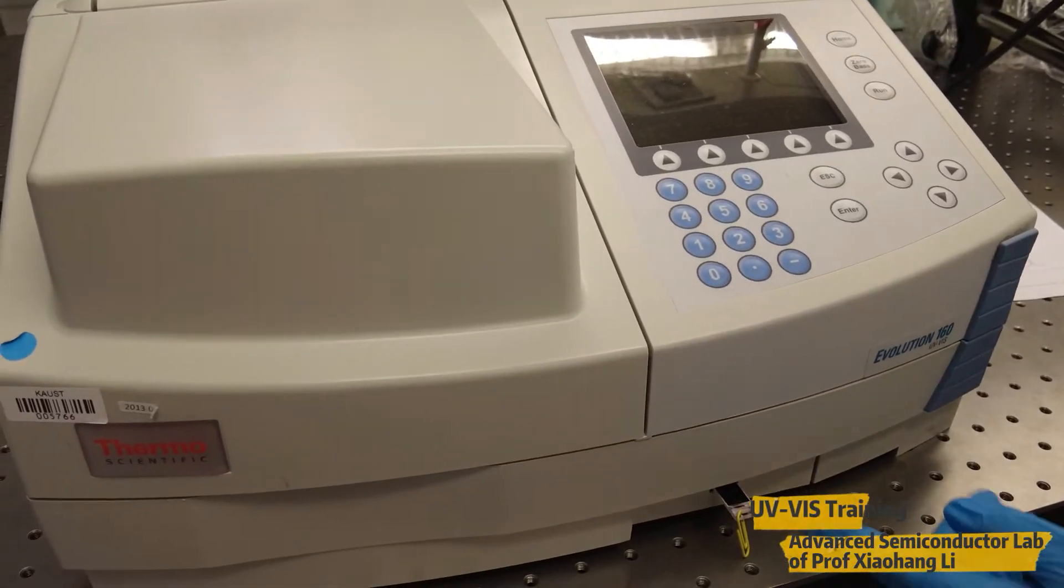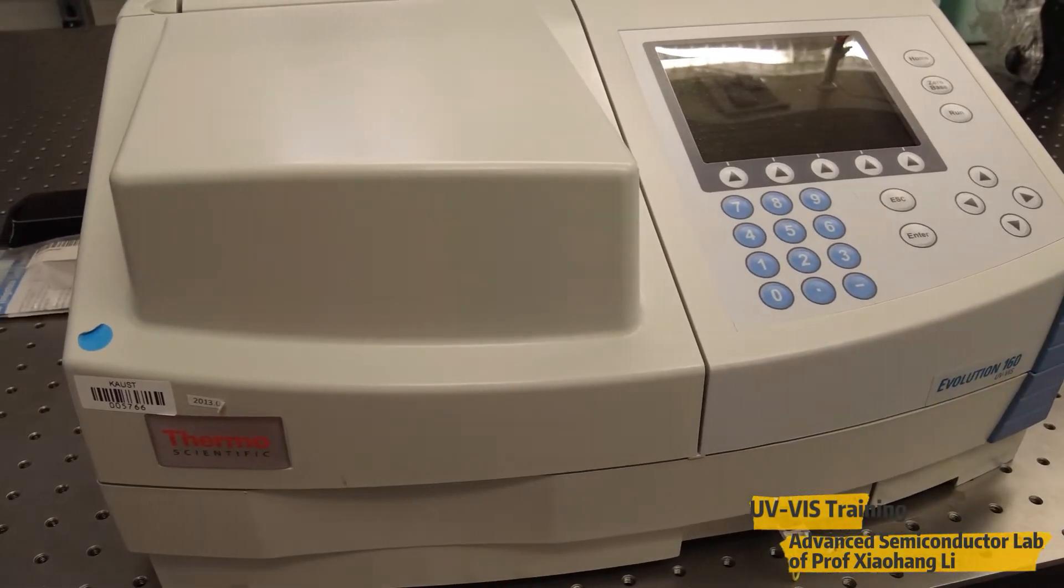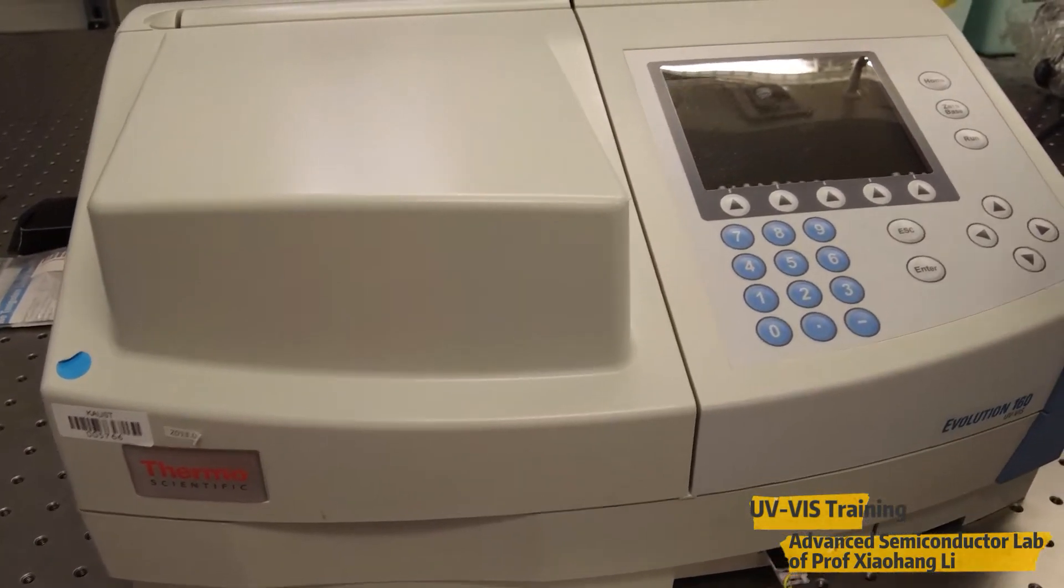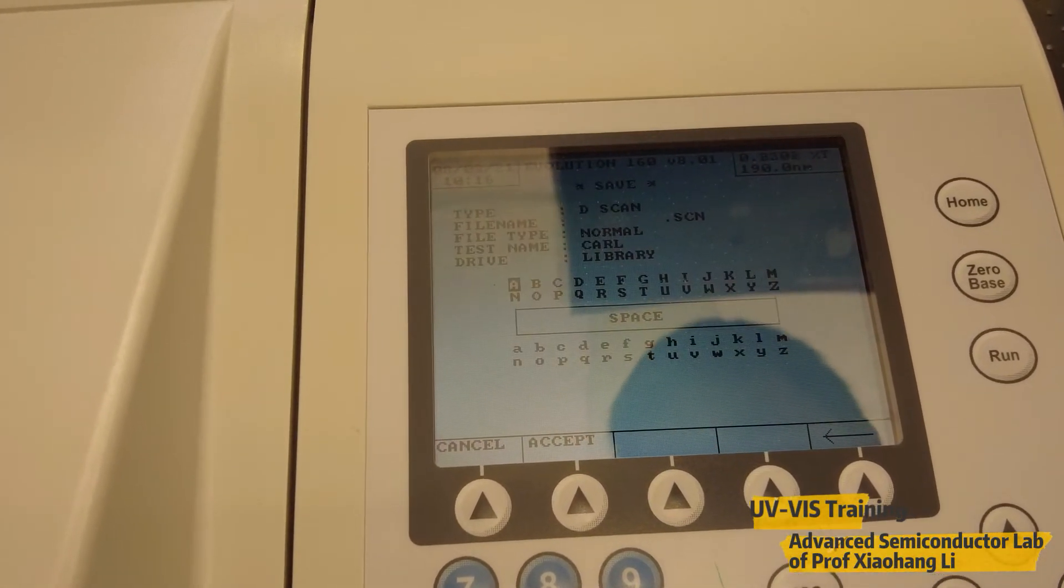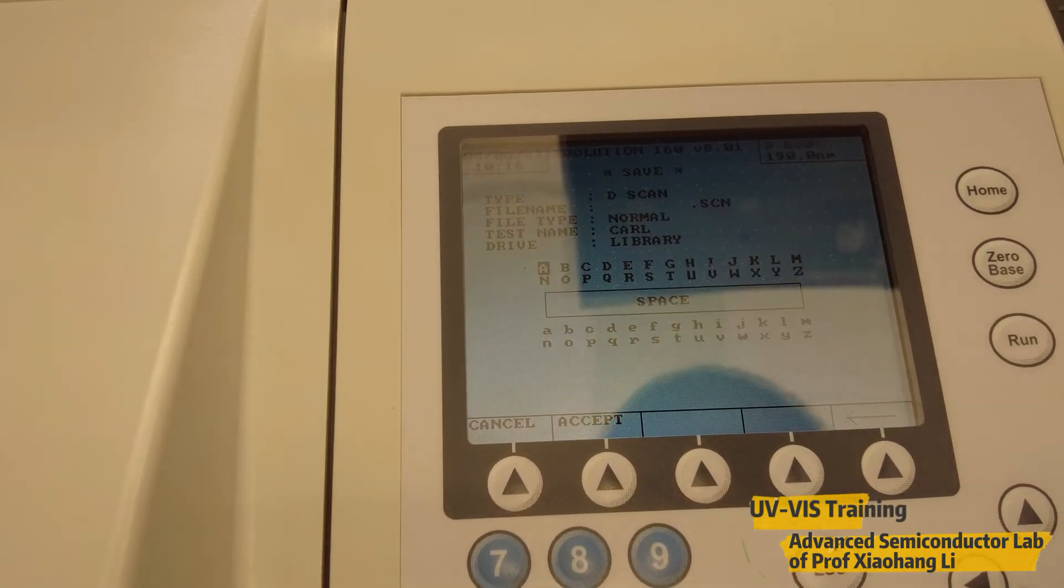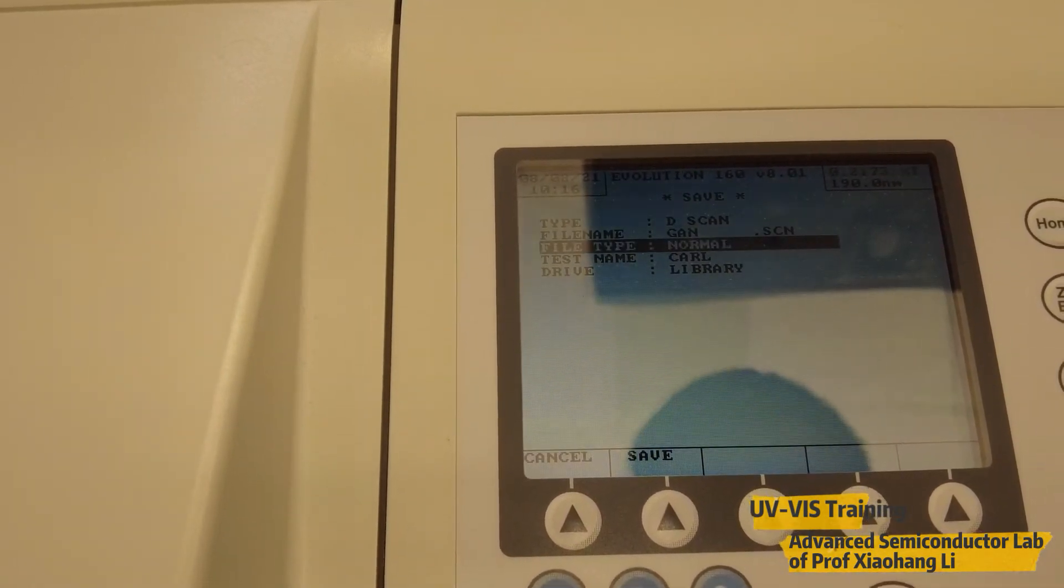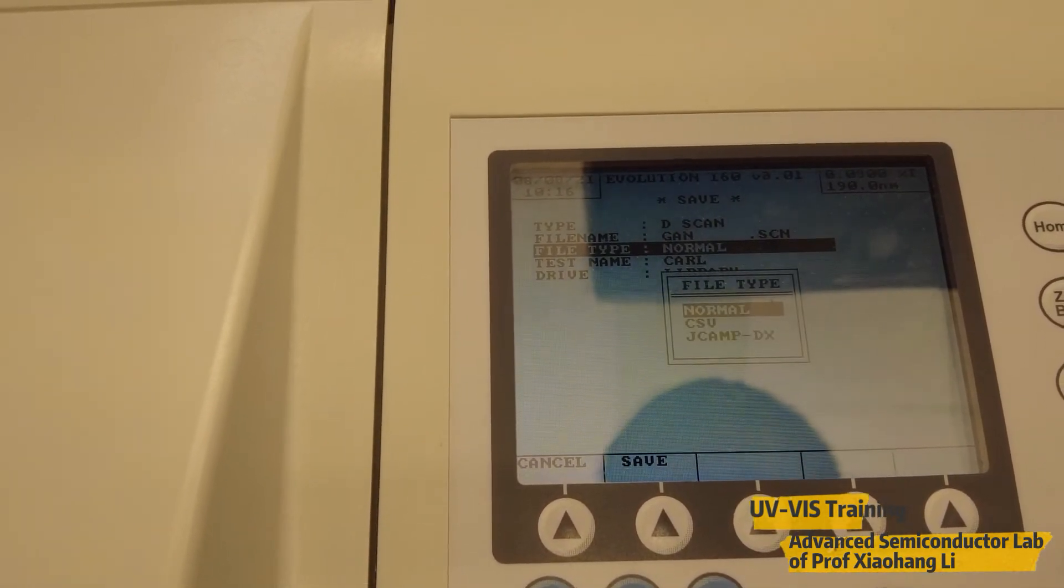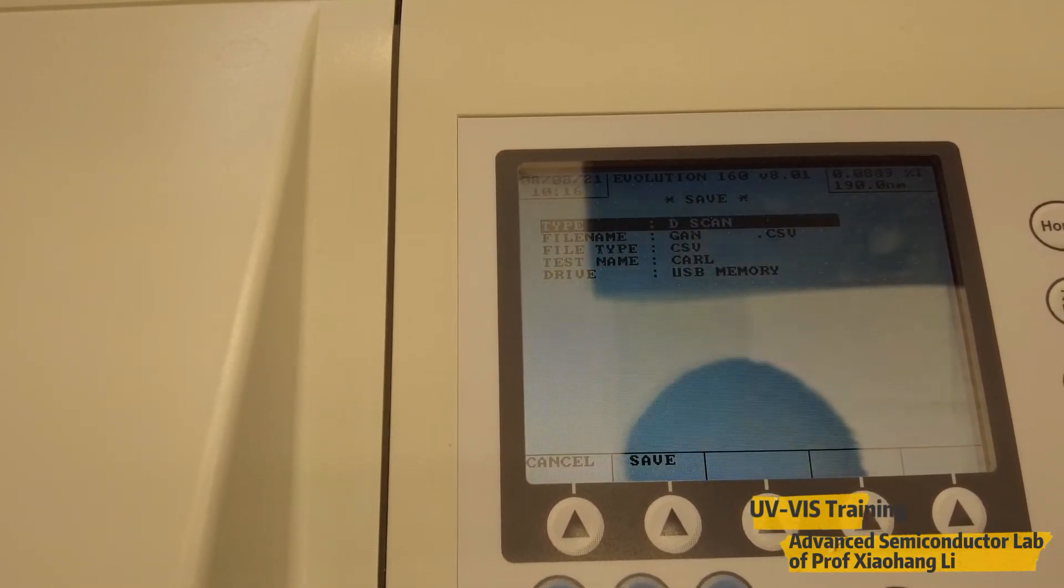There's a USB port from here. By the USB we can output our measurement data. Let's save our data. By pressing save data, we can give a file name such as gallium nitride. Then we can accept. Here we choose the file type. We can choose as CSV. We can open it with Excel, Origin and other software.